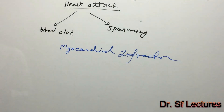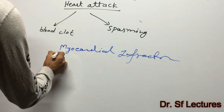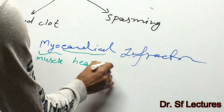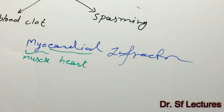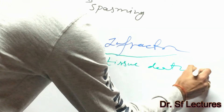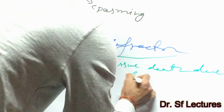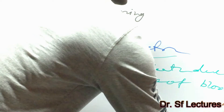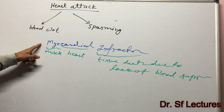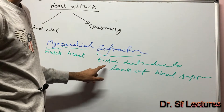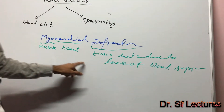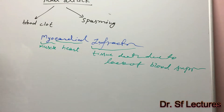Now talking about myocardial infarction by definition: 'myo' means muscle, 'cardial' means heart, and 'infarction' means tissue death due to lack of blood supply. So the general meaning of myocardial infarction is death of heart muscle tissue due to lack of blood supply.